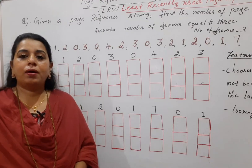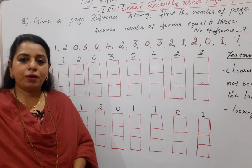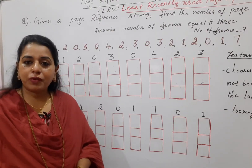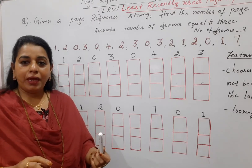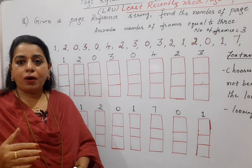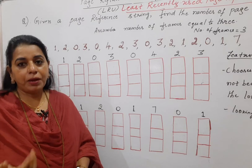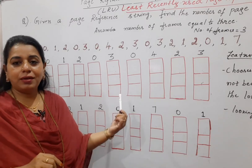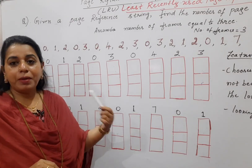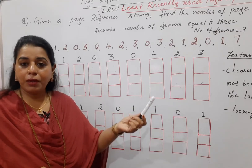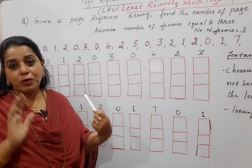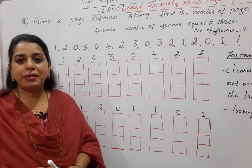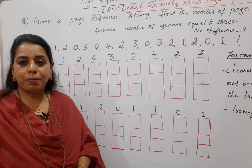The logic used here is to choose the page that has not been used for the longest period of time. If you compare this with the previous optimal page replacement algorithm, there you are looking in the forward direction, whereas here in the backward direction. There it was the page that will not be used in future; here it is the page that was used long ago in the past that gets replaced.